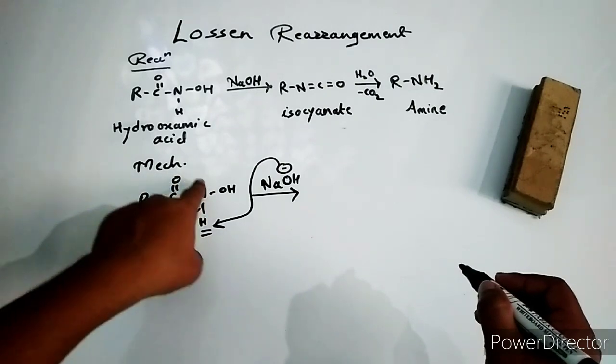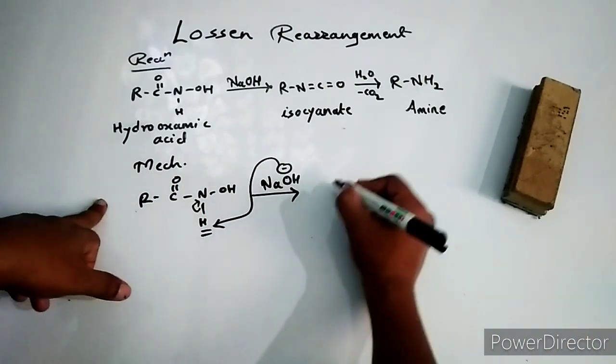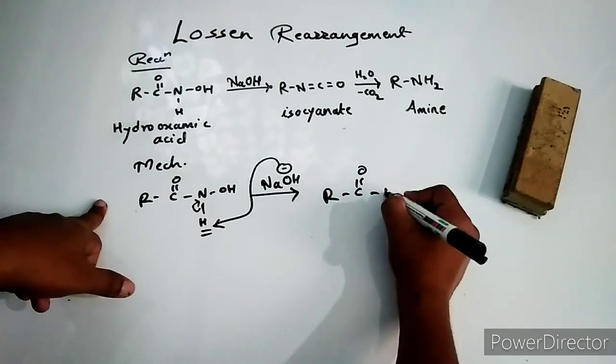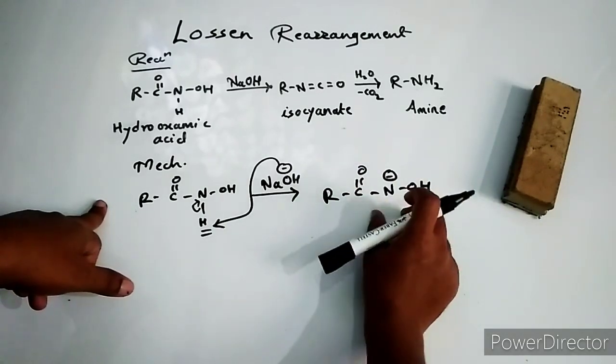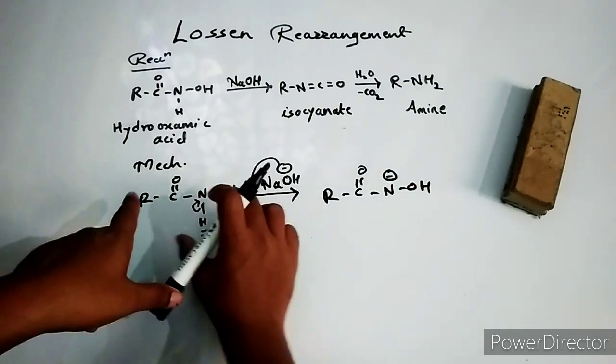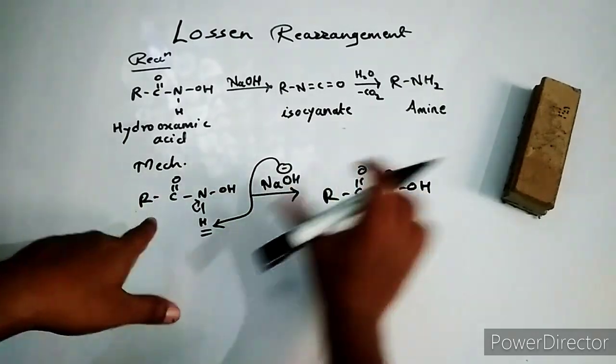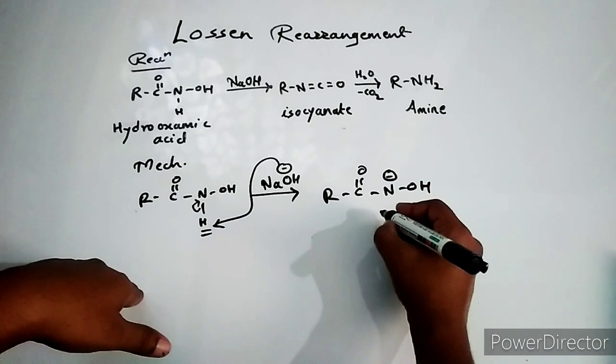The conjugate base which is going to be formed has the negative charge on nitrogen. This negative charge is stabilized by the resonance of carbonyl, hence this conjugate base becomes stable and this becomes the driving force for this step. Now in the next one...